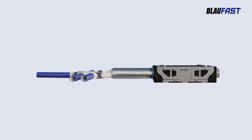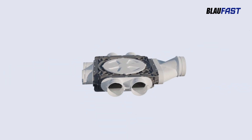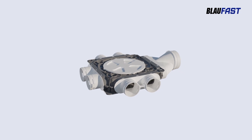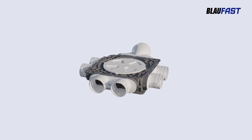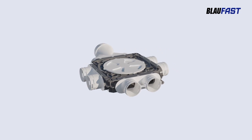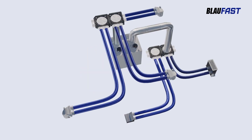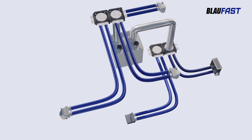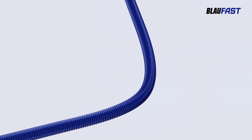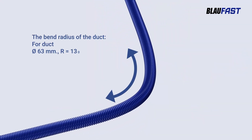Specifically designed flange connections ensure C air tightness class. Air duct design allows routing them with turns with a radius of two nominal diameters.